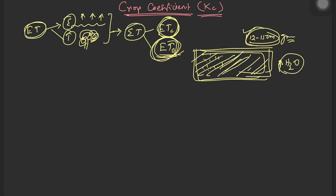The formal definition of reference evapotranspiration is: it is the evapotranspiration from an extensive surface of green grass of uniform height — 12 centimeters — actively growing, completely covering the ground, with an average albedo of 0.23, and not short of water. That is called reference evapotranspiration, denoted as ET₀.